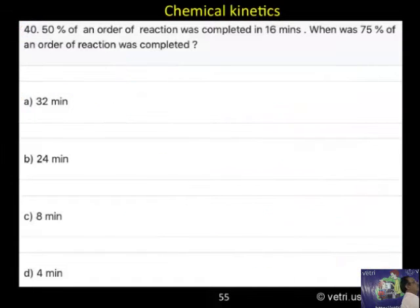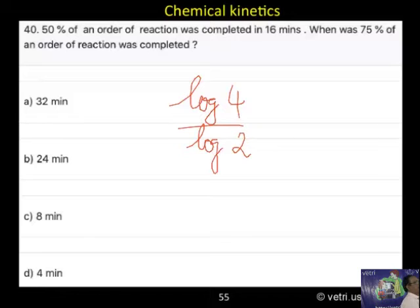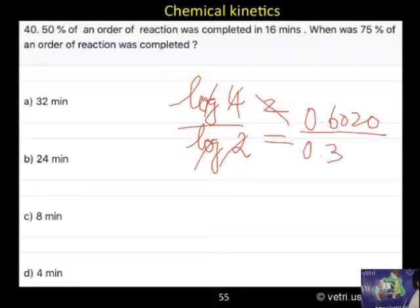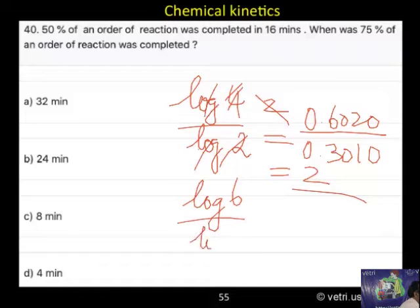Log 4 by log 2, how I am calculating? So, I should not cross, log 4 by log 2, I should not do that way. What we have to do now calculation, log 4 is 0.6020 divided by 0.3010, then only it is 2. I should not cross like this, say for example.